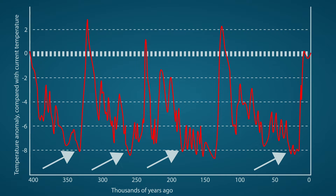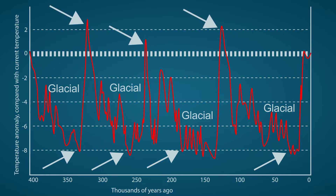These cold periods within ice ages are called glacial periods. The warm periods are short periods within a predominantly cold period. Sometimes it was even a few degrees warmer than today. These warm periods are called interglacials.